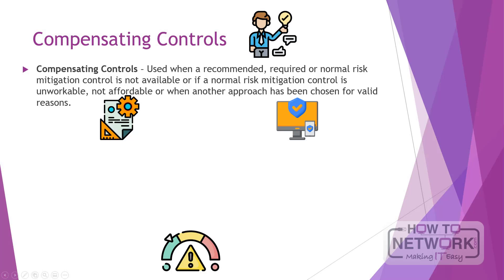Compensating controls are used when a recommended, required, or normal risk mitigation control is not available, unworkable, not affordable, or when another approach has been chosen for valid reasons. There are usually strict formalized processes for justifying the use of a compensating control. For example, PCI DSS, which is the Payment Card Industry Standard, provides a working definition of a compensating control, stating that it must meet or exceed the intended level of protection as specified in the original control requirement, provide a level of protection that sufficiently offsets or covers the risk that the original control requirements would address, provide greater levels of protection against the total risk set that the originating standard addresses, and provide a degree of overall safety and security that is on par with the risk of not using the recommended or required original standard in whole or part.